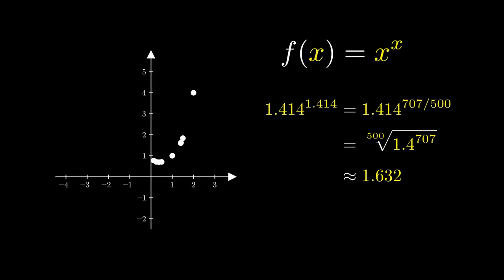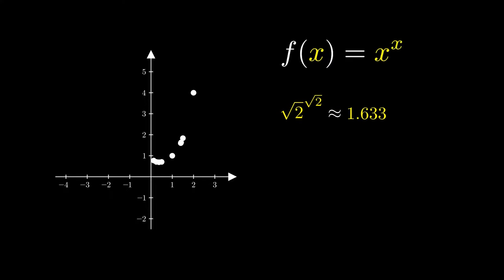We can do this with 1.414 raised to itself. And as we let this sequence continue, we approach the expression the square root of 2 to the square root of 2. In a sense, this is the limit of its decimal expansion. This approximates 1.633. We can fill in the rest of the curve to obtain the familiar shape on the right side of the x-axis.